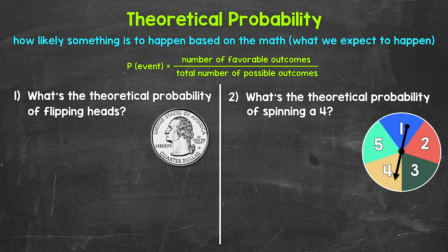Basically, it's what we expect to happen based on the math. We use the number of favorable outcomes and the total number of possible outcomes. Theoretical probability uses thinking, reasoning, and math to find probability, rather than doing an actual experiment where we find the probability based on the results of the experiment.